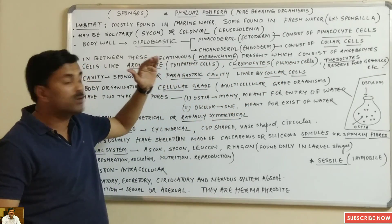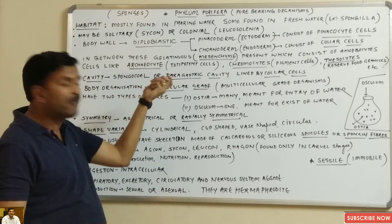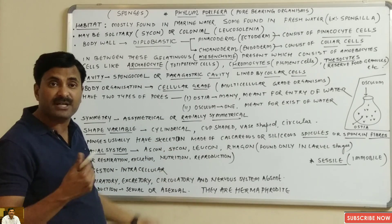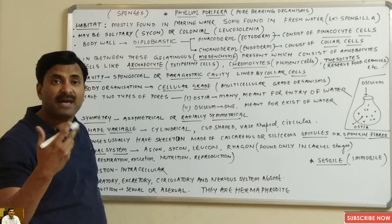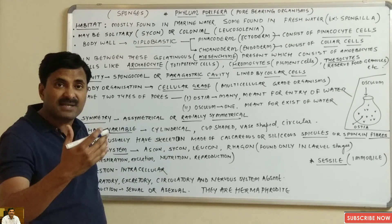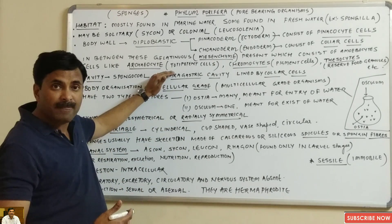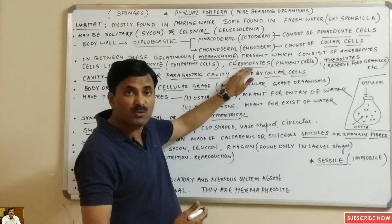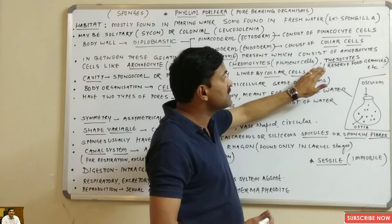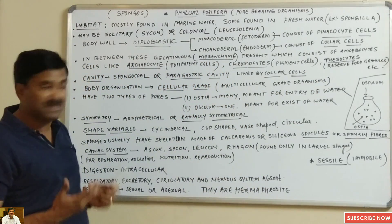The amoebocytes are of various types. One type is called archaeocyte cells — these are undifferentiated, totipotent cells having the power to form any cell, including sex cells such as sperms and ova. Another type is chromocyte cells, which are pigment cells. The mesenchyme also contains thesocyte cells, which have reserved food granules.